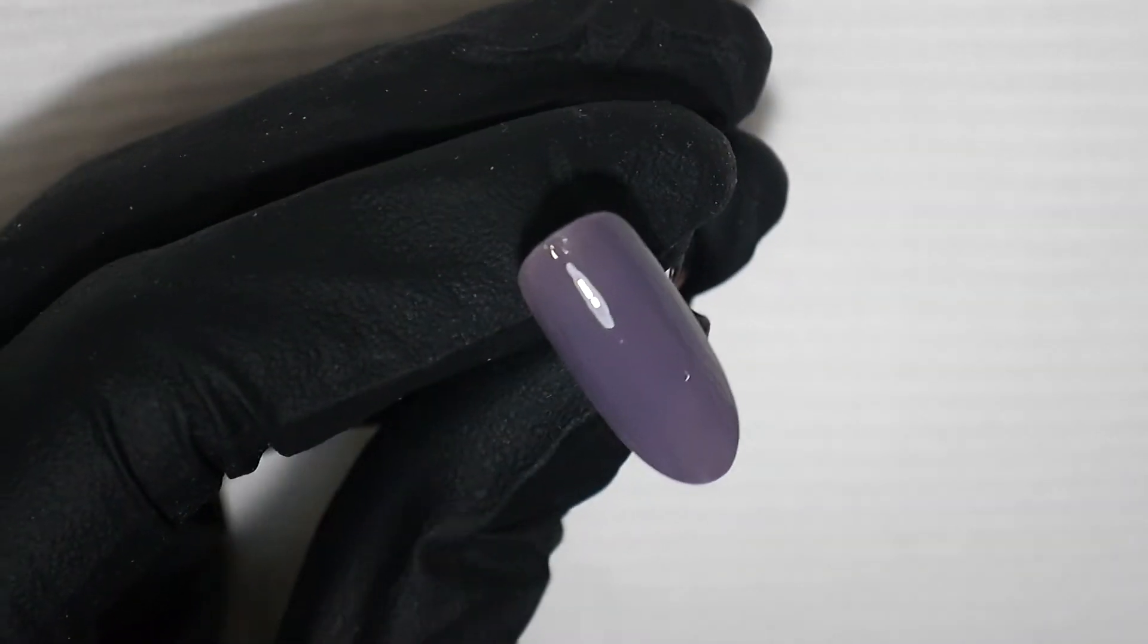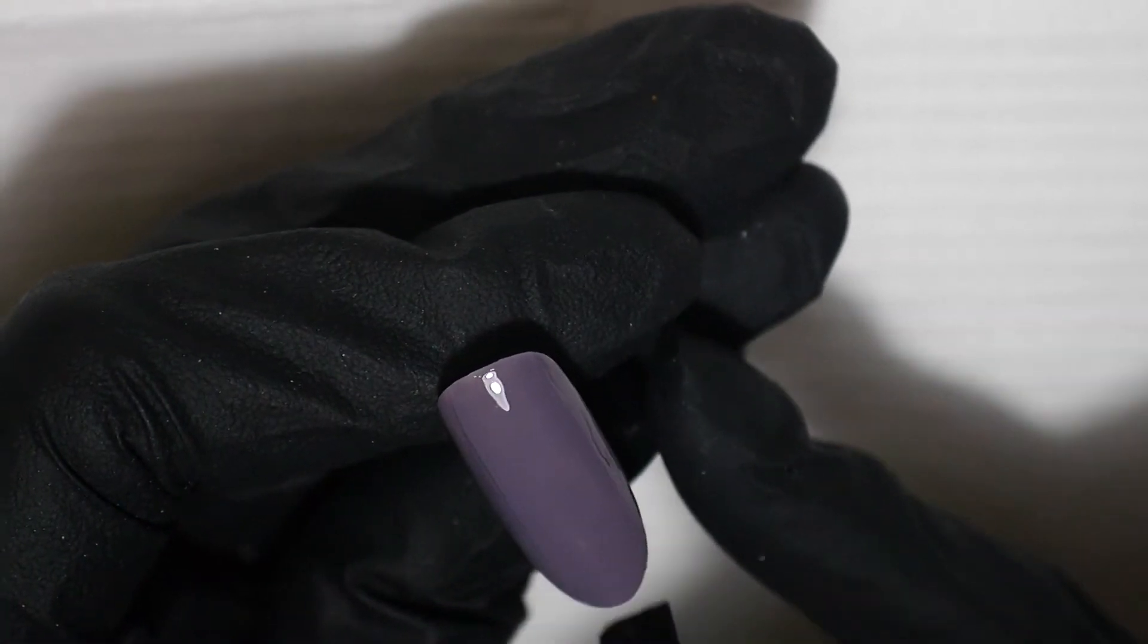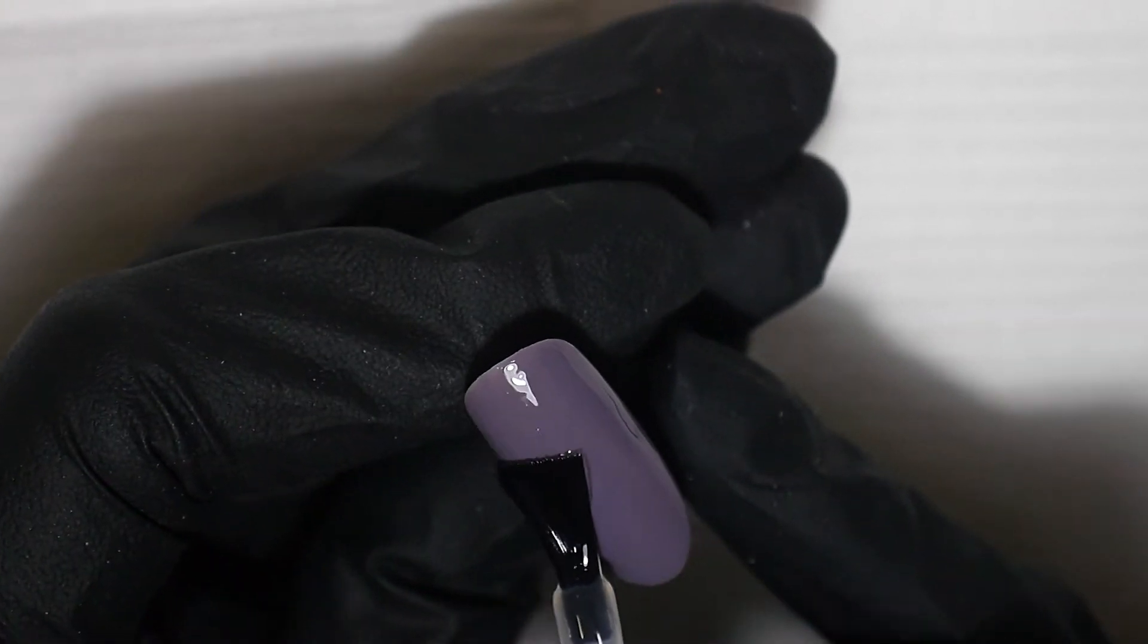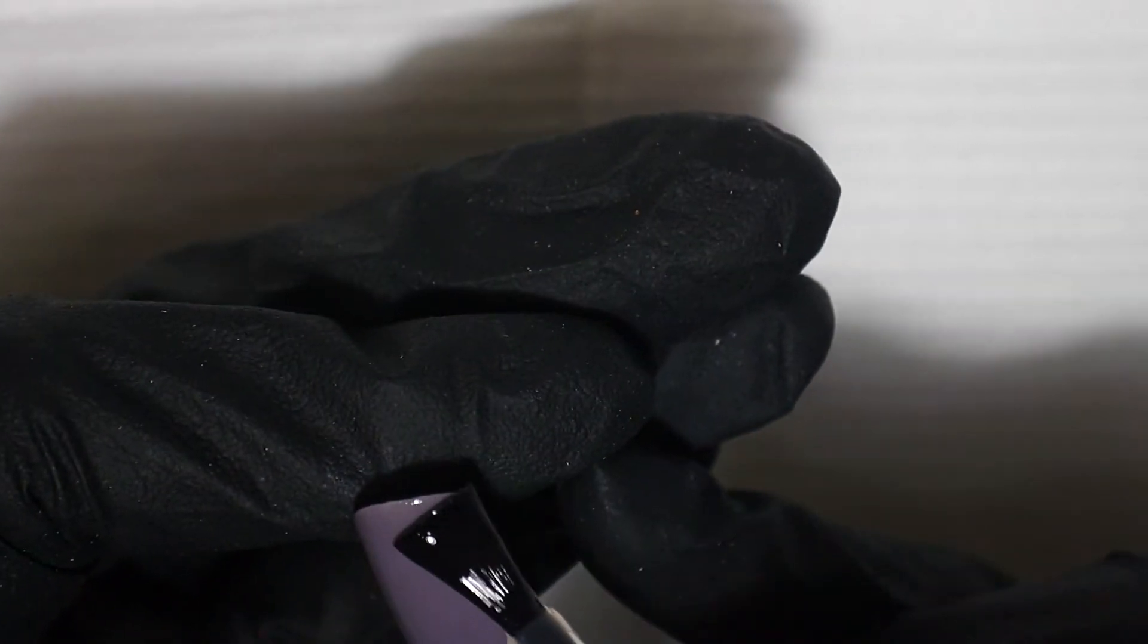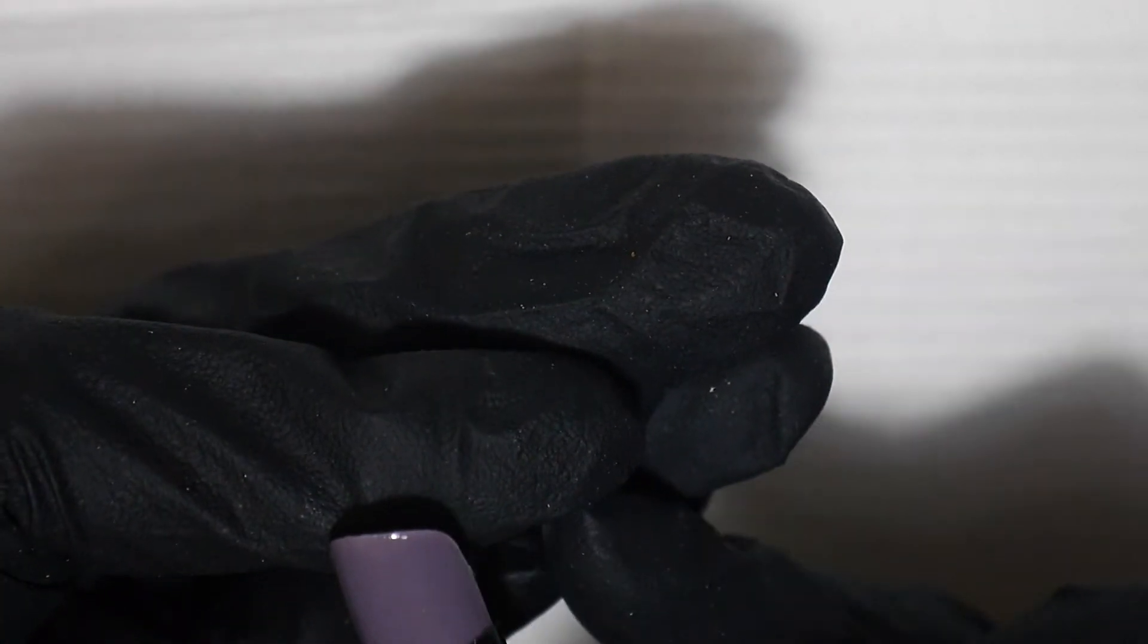And as if we're going to be stopping there, we're going to stop and seal that color using a matte top coat. You're going to want to make sure there is no tacky layer on this nail before moving on, so let's give it a quick cleanse.